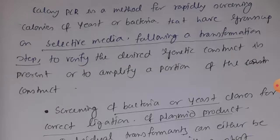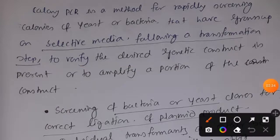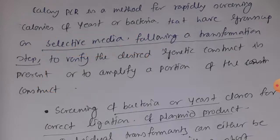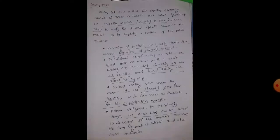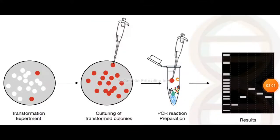In Colony PCR, suppose this is a petri plate containing many colonies. Colony PCR will help you screen them rapidly, and it will also help you amplify a specific portion of that genetic construct that you are looking for specifically. So let's see how Colony PCR is done.